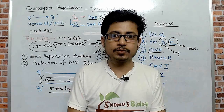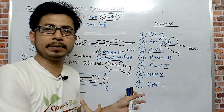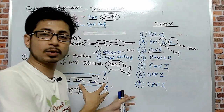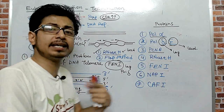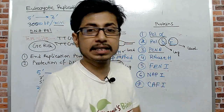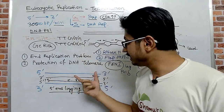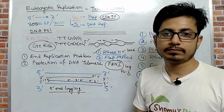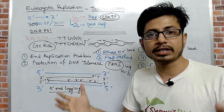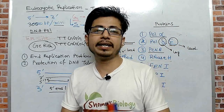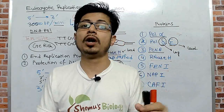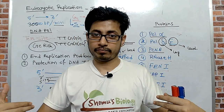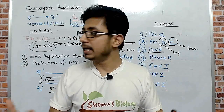This creates a big problem known as the end replication problem. Every single round of DNA replication, the new strand gets shorter and shorter, meaning genetic information is lost from the terminal ends. This is the end replication problem.